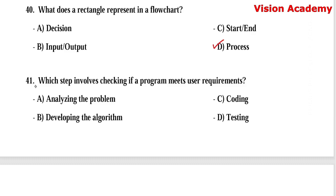Question number 41: Which step involves checking if a program meets user requirements? Option A, analyzing the problem. Option B, developing the algorithm. Option C, coding. Option D, testing. Here, option D, testing, is the right answer.